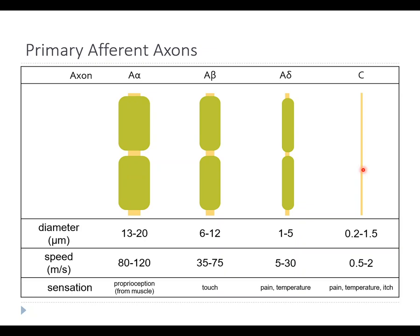The effect of diameter and myelin relates to action potential conduction velocity. The main difference between these axons, other than physical size, is conduction velocity. The A-alphas are the fastest — up to 120 meters per second. Velocities get slower as axons get thinner and less myelinated, because positive current leaks out of the axon membrane, making it harder for an action potential to propagate. A C fiber has the slowest action potentials, between 0.5 and 2 meters per second — and it's hard to overstate how slow that is. You can actually walk faster than 0.5 meters per second.